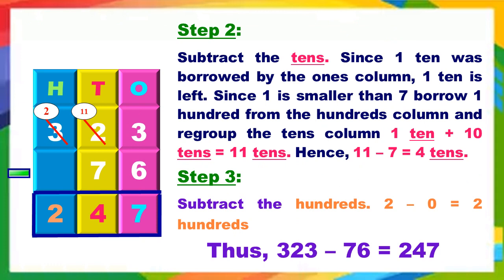Step 2: Subtract the tens. Since 1 ten was borrowed by the ones column, only 1 ten is left. Now, 1 is smaller than 7, so borrow 1 hundred from the hundreds column and regroup the tens column as 1 ten plus 10 tens equals 11 tens. So 11 tens minus 7 tens equals 4 tens. Remember, 1 hundred is equal to 10 tens. Step 3: Subtract the hundreds. Since 1 hundred was borrowed by the tens column, 2 hundreds are left. So 200 minus 0 is equal to 200. Thus, 323 minus 76 is equal to 247.